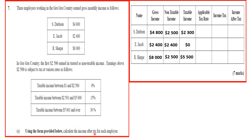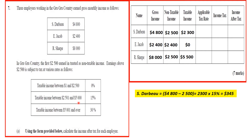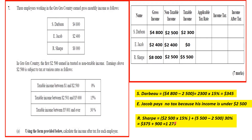Now we calculate the income tax for each employee. For Dabo, his taxable income is $2,300 — which falls in the 15% bracket — so $2,300 multiplied by 15% equals $345. EJ Cup pays no tax. R. Sharp has $2,500 at 15%, which gives $375, and another $3,000 in the 50% bracket, which gives $900. Adding those together gives $1,275 total income tax for R. Sharp.